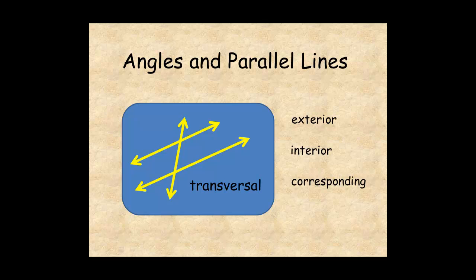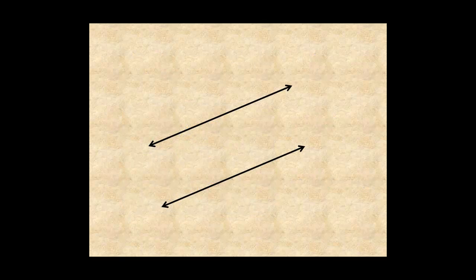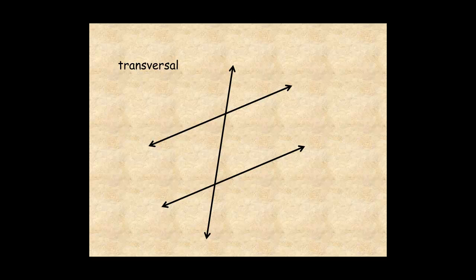This lesson helps you understand angles in parallel lines. A line that crosses two other lines at different points is called a transversal. The angles formed have special names.